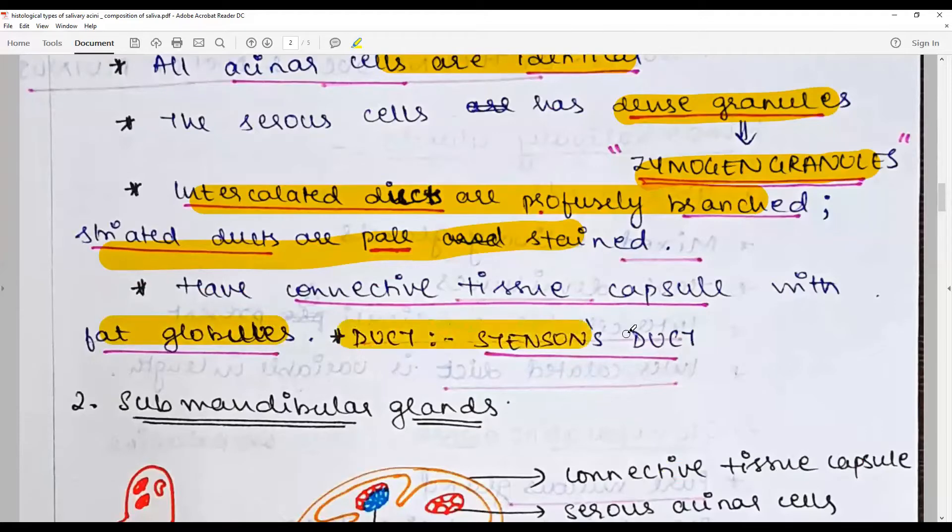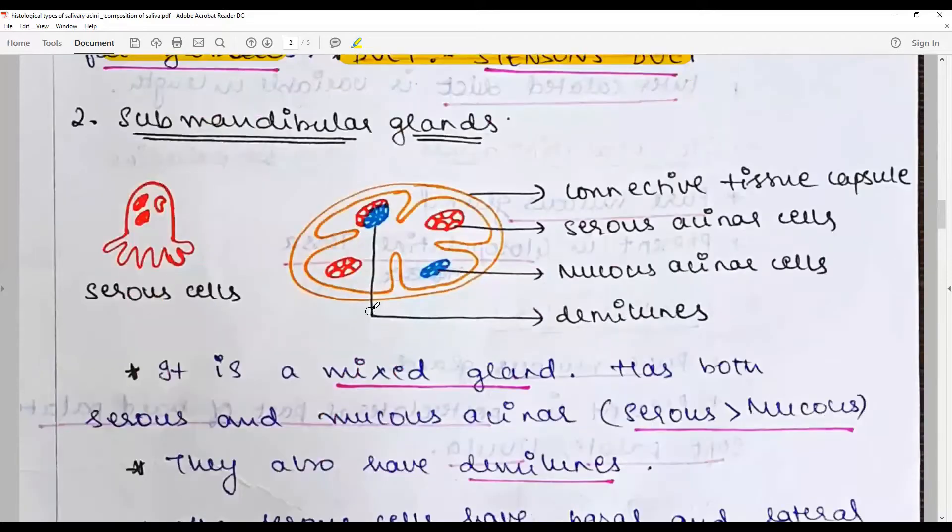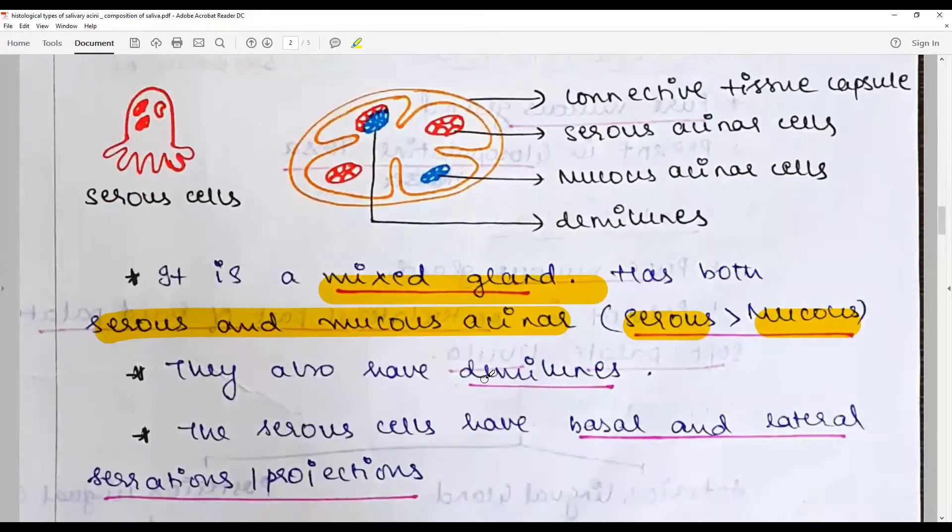Submandibular gland is a mixed gland, has both serous and mucous ends but serous predominating over the mucous ends. It is seromucous. They also have a structure called demilunes that we will deal with now.